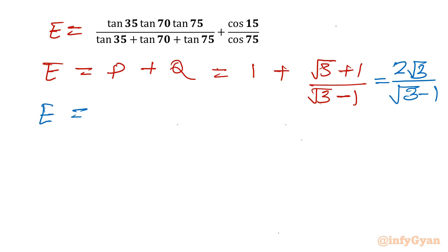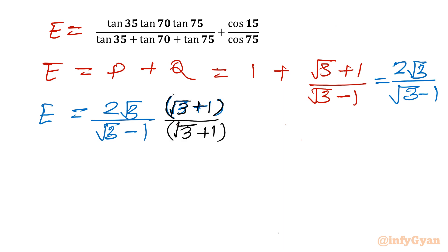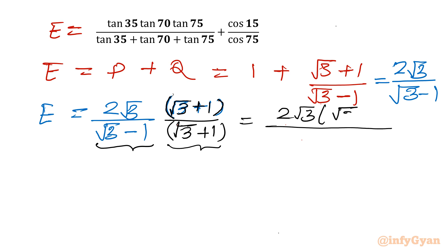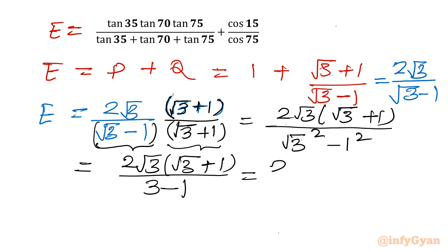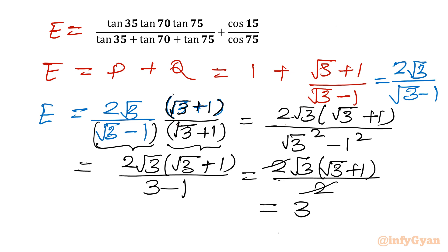Rationalizing by multiplying numerator and denominator by the conjugate root 3 plus 1: the denominator becomes (root 3 minus 1)(root 3 plus 1), which is a squared minus b squared form, giving root 3 squared minus 1 squared equals 3 minus 1 equals 2. The numerator is 2 root 3 times (root 3 plus 1). The 2's cancel, giving root 3 times (root 3 plus 1), which equals 3 plus root 3.